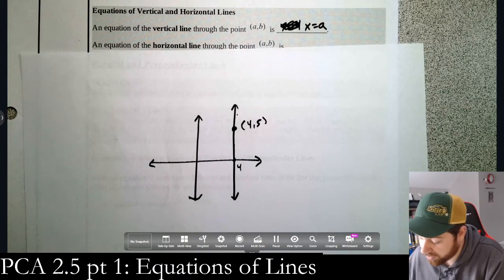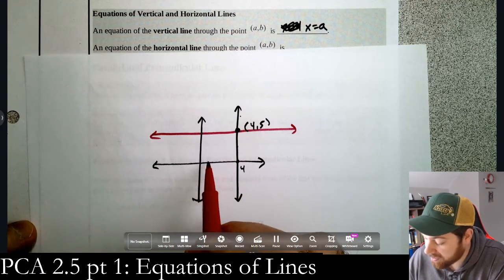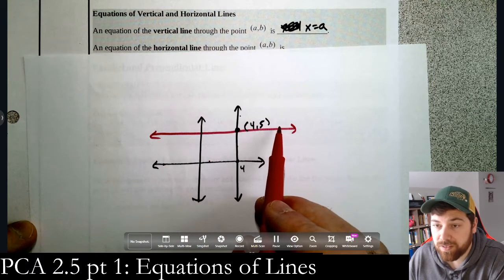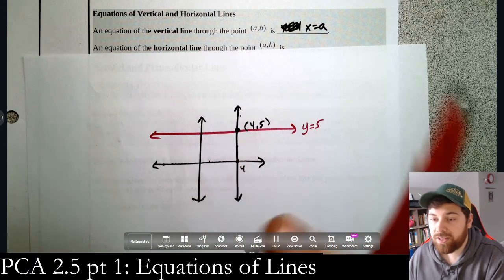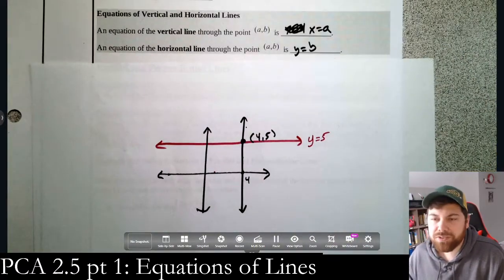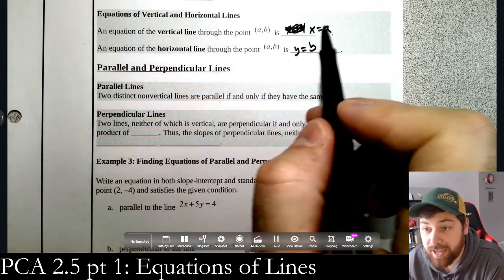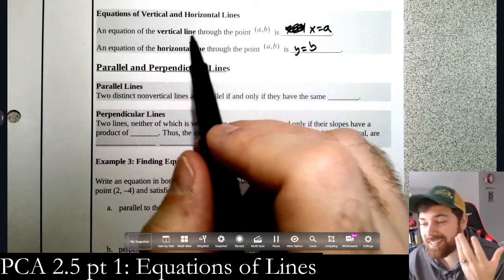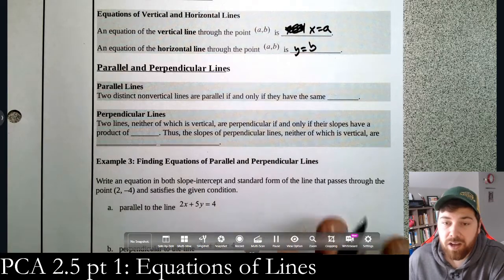For a horizontal line: no matter what x is — whether x = 1 or x = -3 — y is always 5 on that line, so we write y = 5, or in general y = b. A memory trick: vertical lines are like the y-axis, but use x equals (the opposite of what you'd expect). The equation of the y-axis itself is x = 0, so vertical lines use x = a, which is opposite to what your brain might expect.